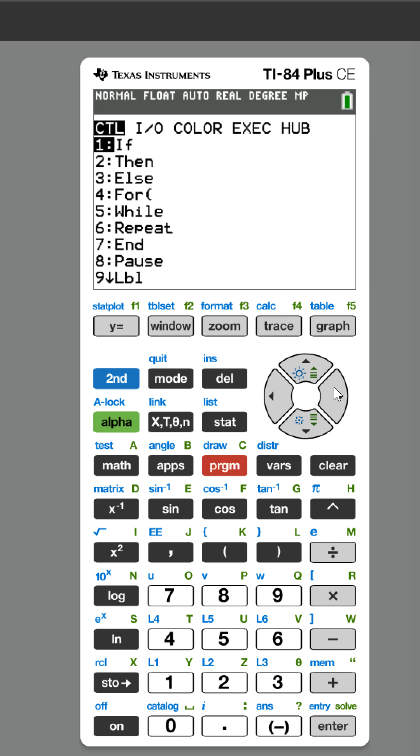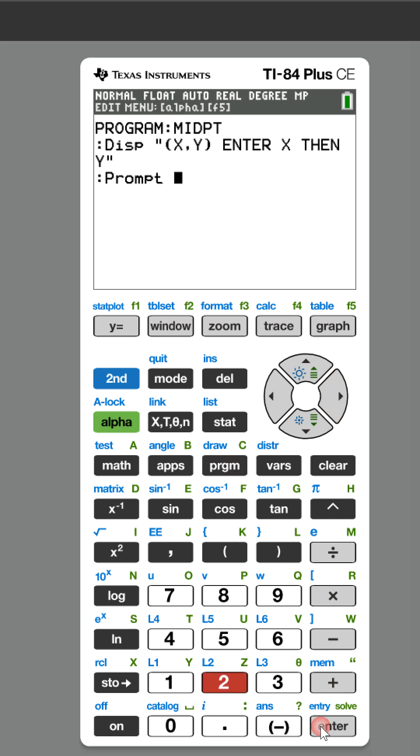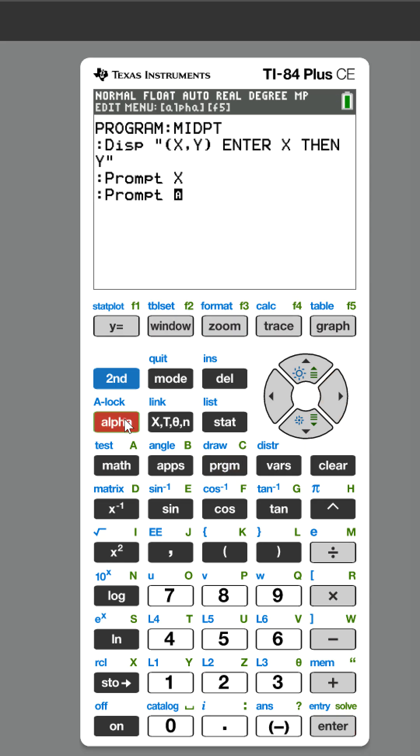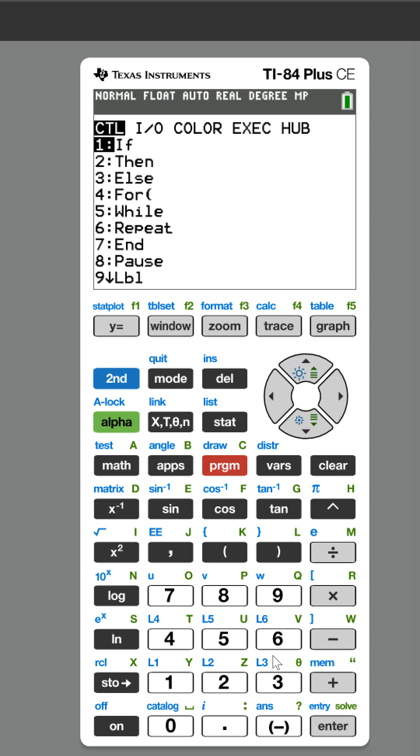We're gonna say enter X then Y and quotes. Now we're gonna prompt the user - that means we're gonna give them the variable and they have to put it in. We're gonna hit alpha X for the X coordinate, then prompt them for the Y coordinate.